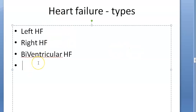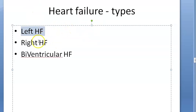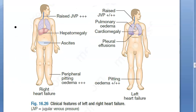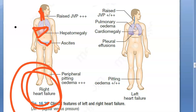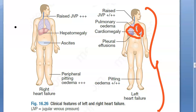Heart failure types are left heart failure, right heart failure, and biventricular. Left heart failure is more common. In right heart failure, the liver is not able to return blood to the heart, so there is hepatomegaly, congestion, raised JVP, and ascites. In left heart failure, the lungs are immediately affected — pulmonary edema is very important — along with raised JVP, plural effusion, and pitting edema.